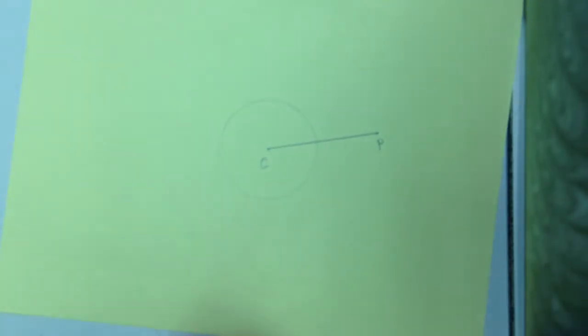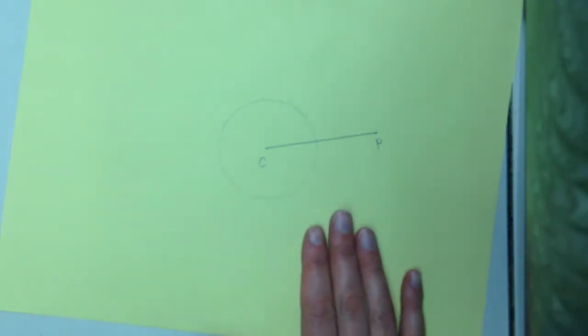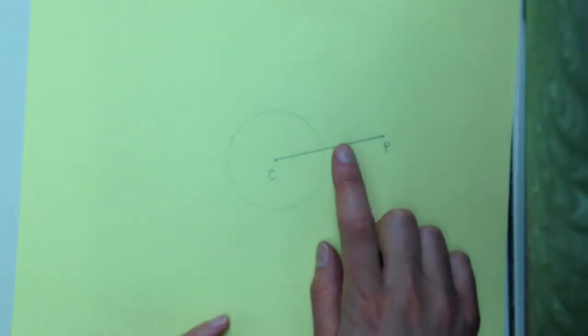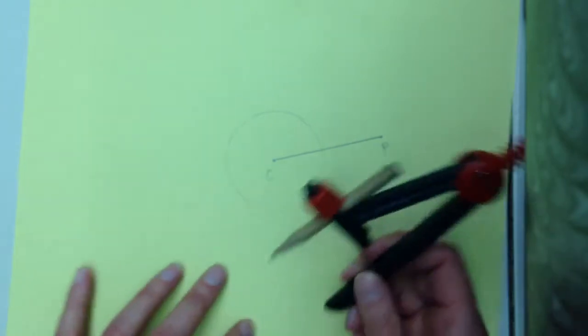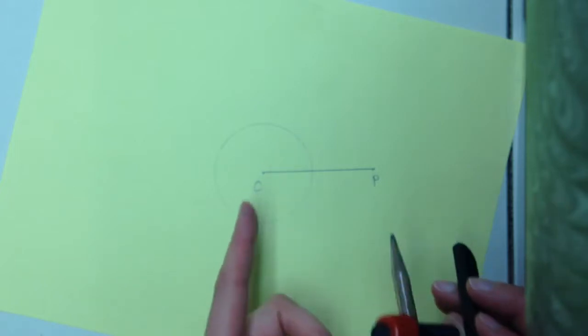That line segment we just created is going to be the diameter of a new circle that we're going to construct. So since this is a diameter we need to know what the center is. So I'm going to take my compass and create the bisector of segment CP.